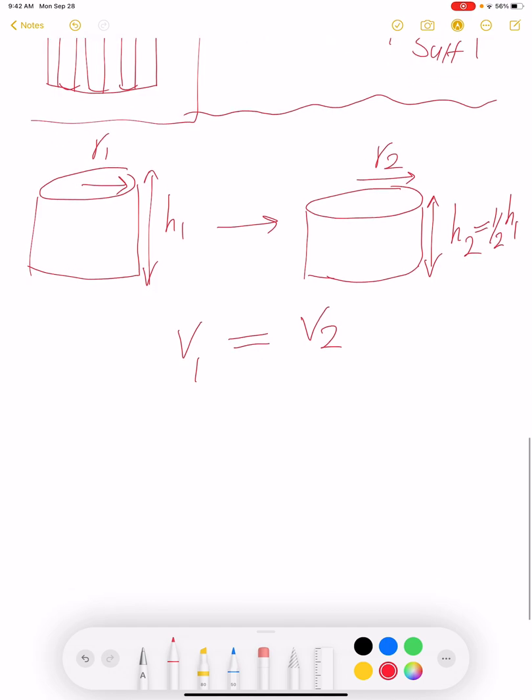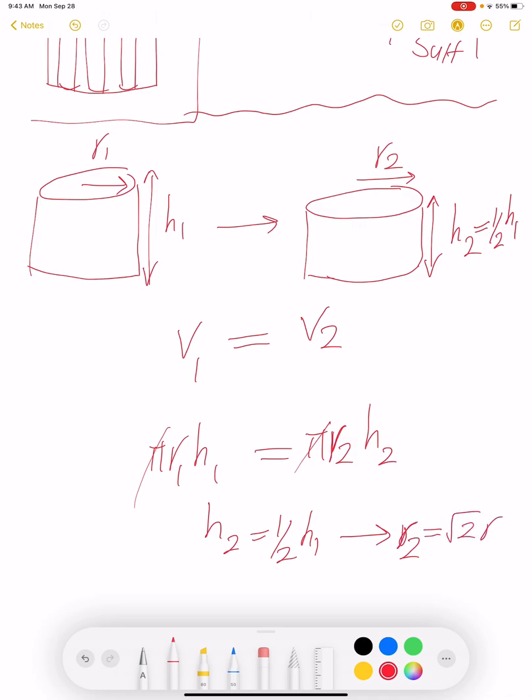But what would be the radius? If we assume that the volume is the same because of conservation of the material, the volume is not going to change. Then pi r1 squared h1, that's the volume of a cylinder, should be equal to pi r2 squared h2. We know h2 is half of h1, then you can find r2 based on r1. This is based on the assumption that the volume is the same, which is not a bad assumption.